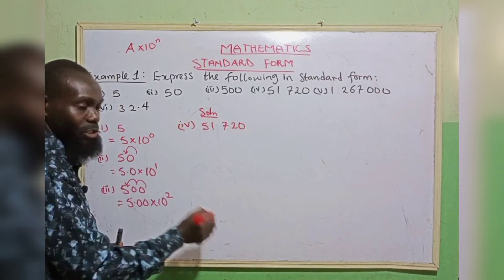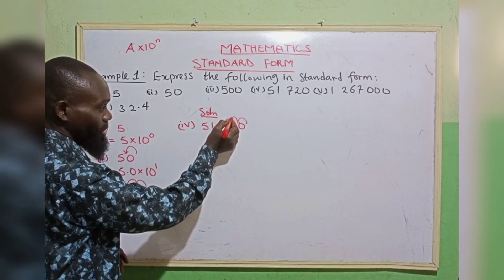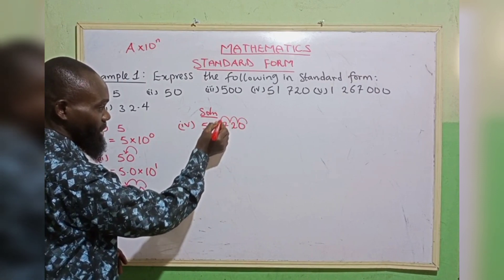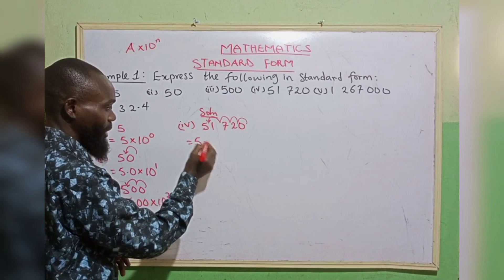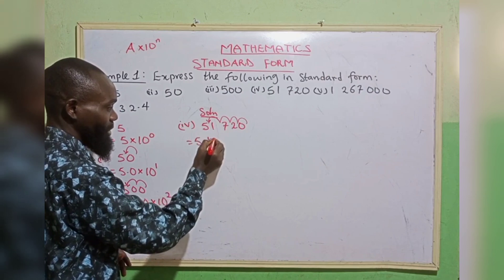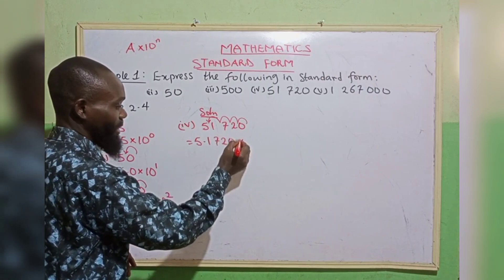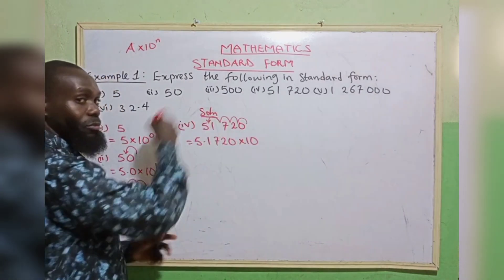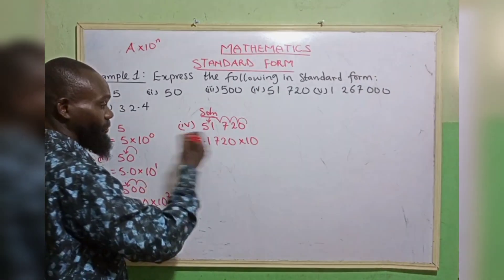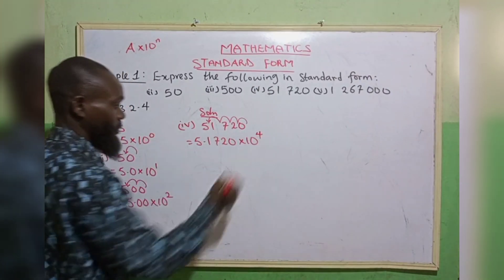Now let us move to the fourth number: 451,720. Moving the decimal point forward 1, 2, 3, 4 places gives 4.5172, multiplied by 10 raised to the power 4, because we are moving forward 4 times — that is positive power 4.